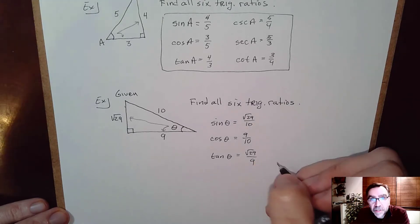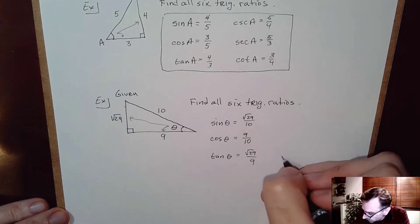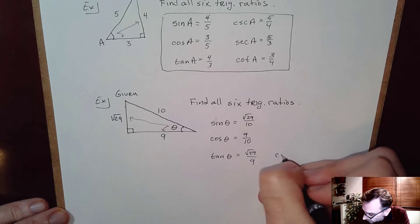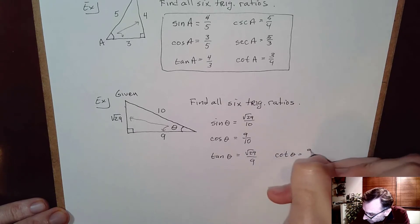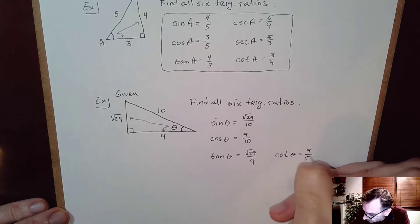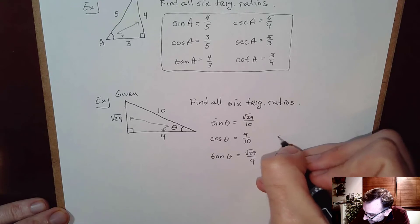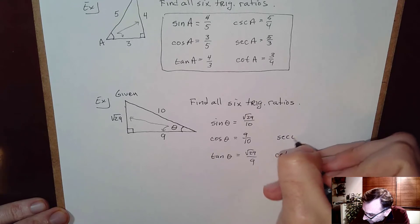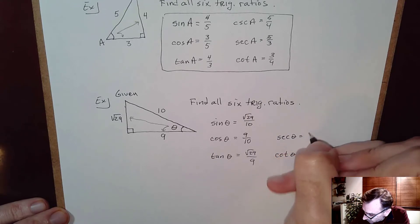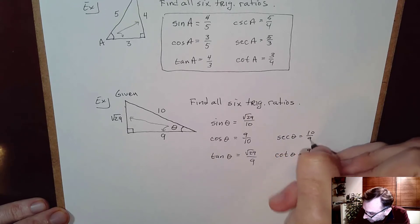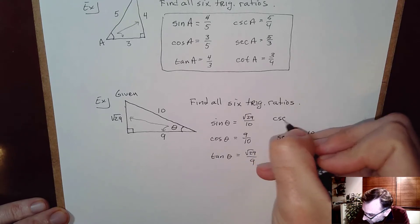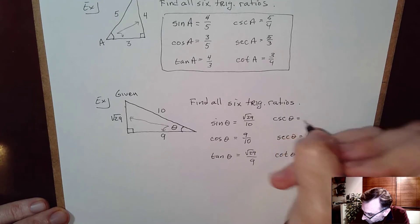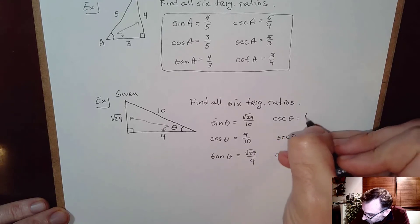The other three trig ratios are just the reciprocals. Cotangent of theta is 9 over √29. Secant of theta equals 10/9. And cosecant of theta equals 10 over √29.